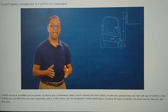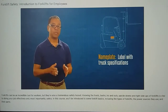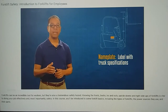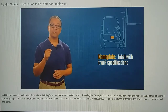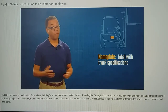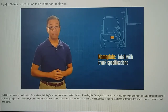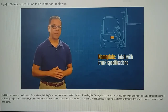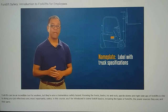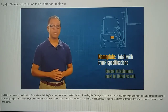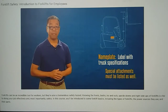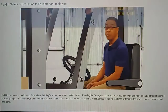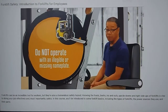Next, we have the nameplate, which is a corrosion-resistant, durable label that includes truck specifications. All forklift operators are required to know where the nameplate is, what's on it, and what those specifications mean. Additionally, if the forklift has a special attachment, it must be listed on the nameplate. Never operate a truck with an illegible or missing nameplate.